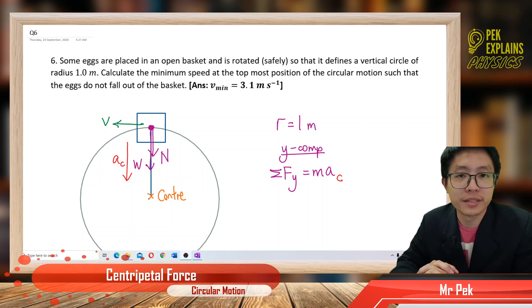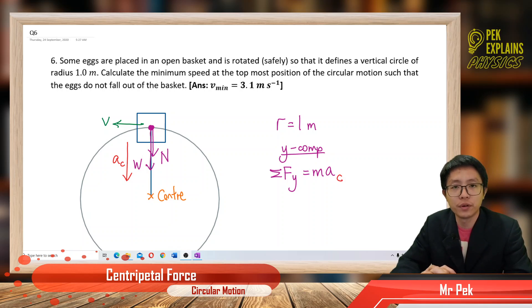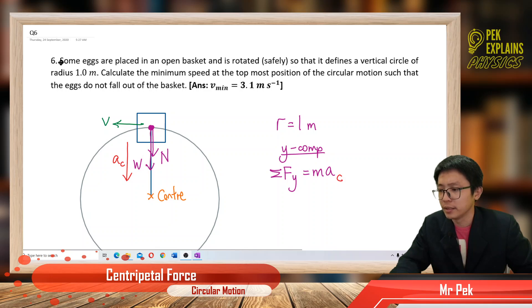Hi, welcome to question 6 in Centripetal Force Circular Motion. Let us read the question together. Some eggs are placed in an open basket and is rotated safely so that it defines a vertical circle of radius 1 meter. Calculate the minimum speed at the topmost position of the circular motion such that the eggs do not fall out of the basket.